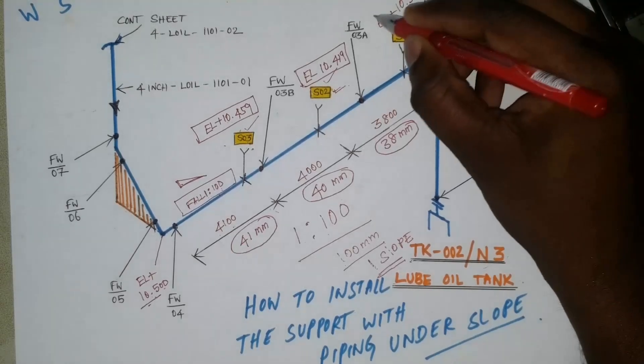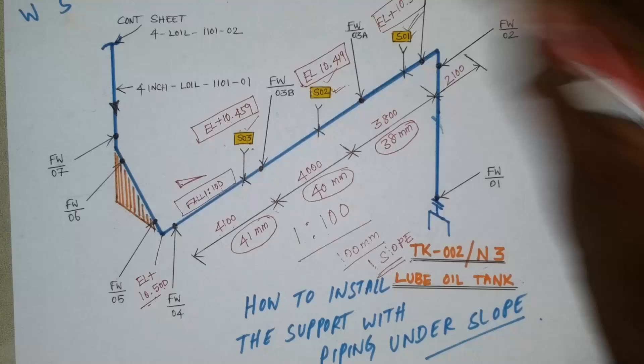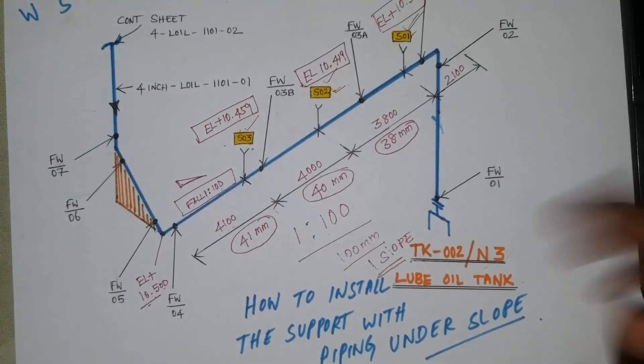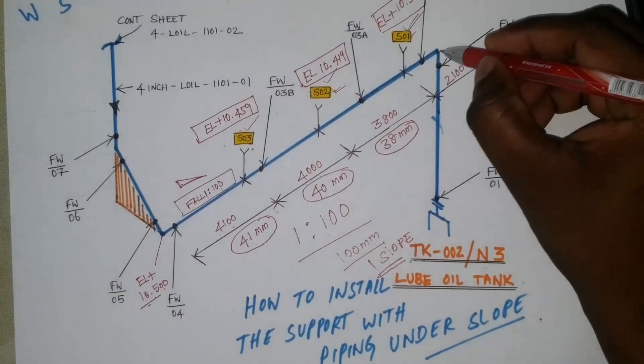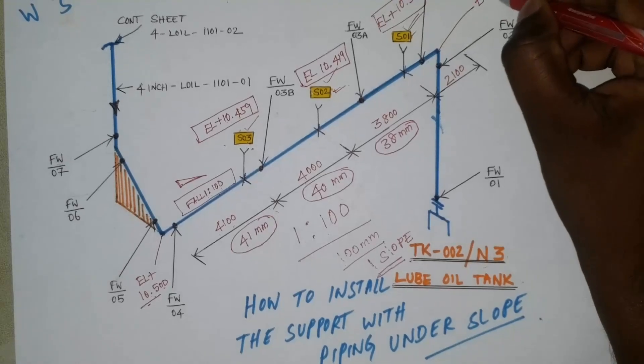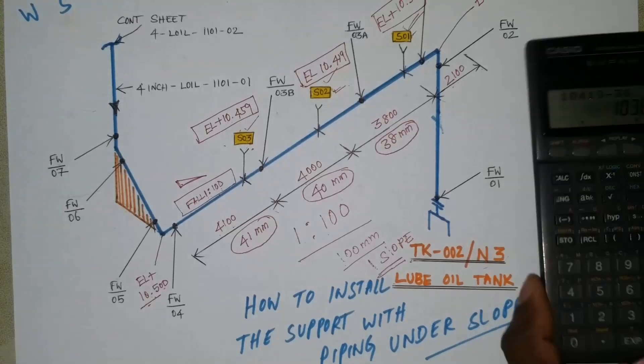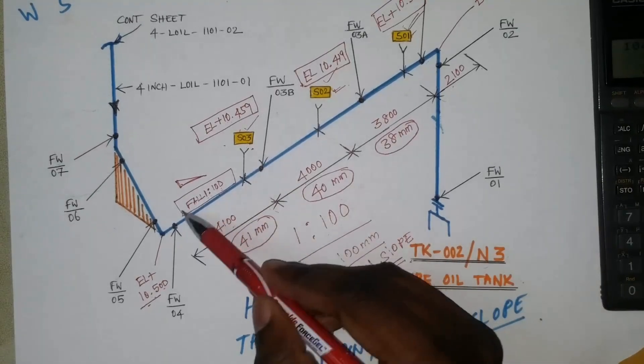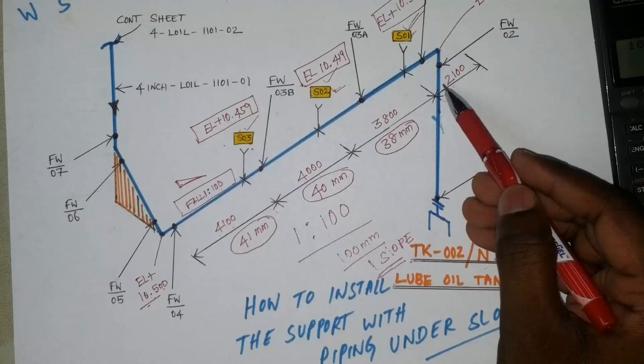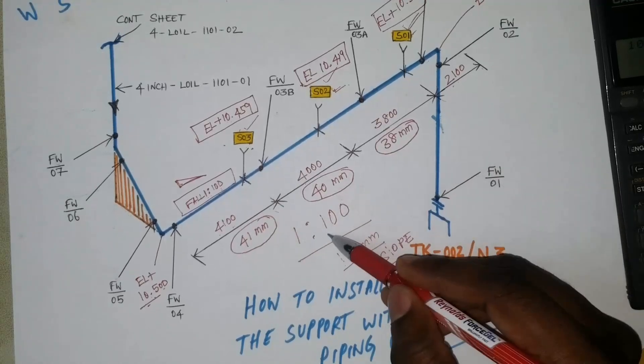And next, this elbow elevation from support 2. This elbow center is 2 meter 100 mm. So our slope will be coming on the down side only. Same 100 mm, so 1 is 100.